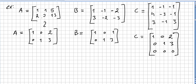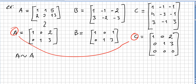So we row reduce each matrix to its row canonical form. Matrix A reduces to [1 0 2; 0 1 3]. Matrix B reduces to [1 0 1; 0 1 3]. Matrix C reduces to [1 0 2; 0 1 3; 0 0 0]. As you can see, A and C have the same row canonical form — both give [1 0 2; 0 1 3] — whereas B does not have the same canonical form.